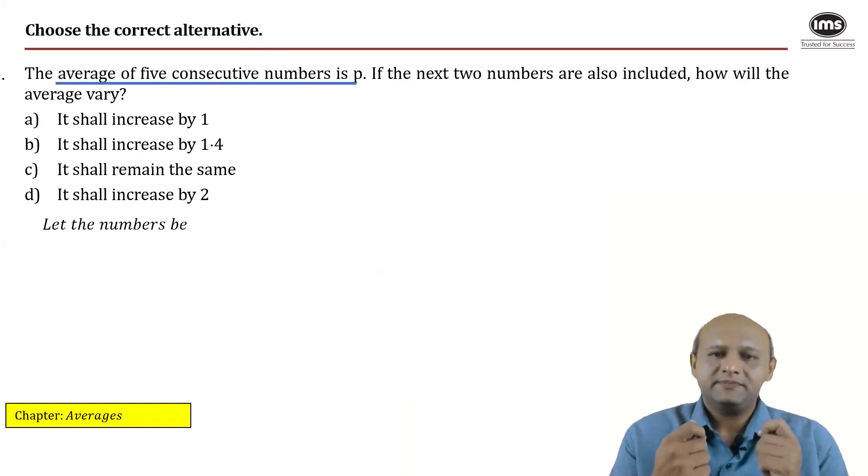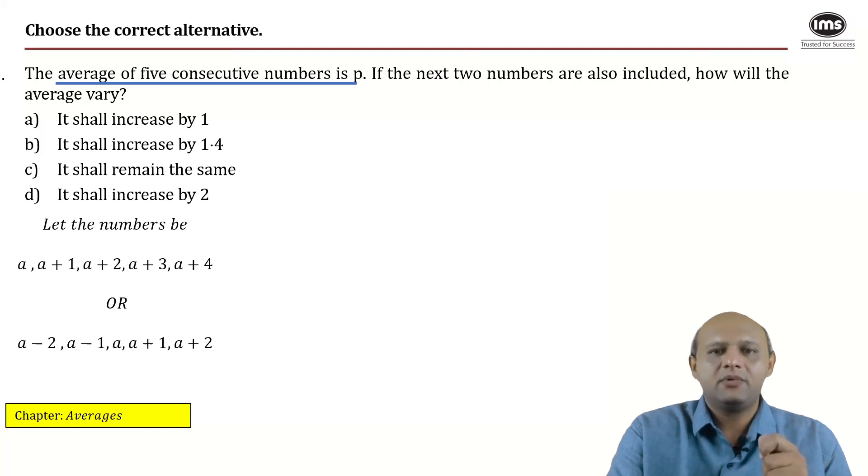What can the numbers be? So typically when we assume numbers one tends to think differently. Of course each to his own. You could assume the numbers to be a, a plus 1, a plus 2, a plus 3, a plus 4 because they are consecutive numbers, or alternatively you could assume the central number to be a.